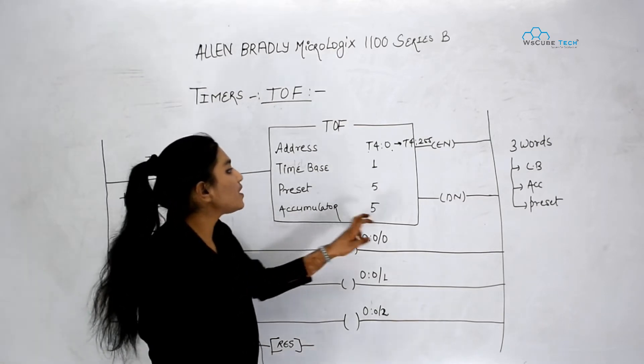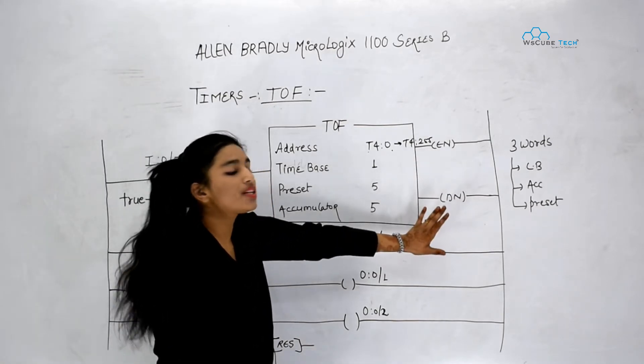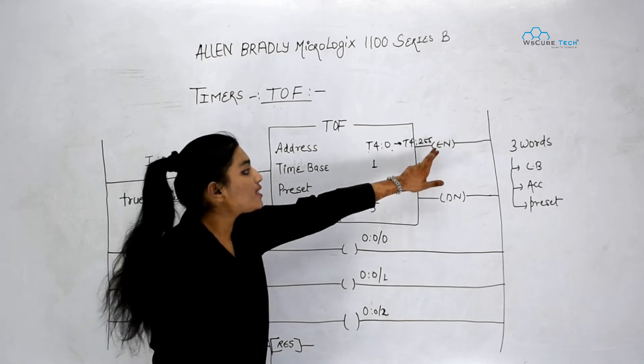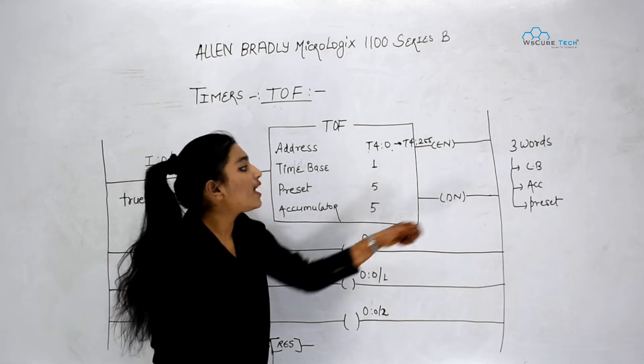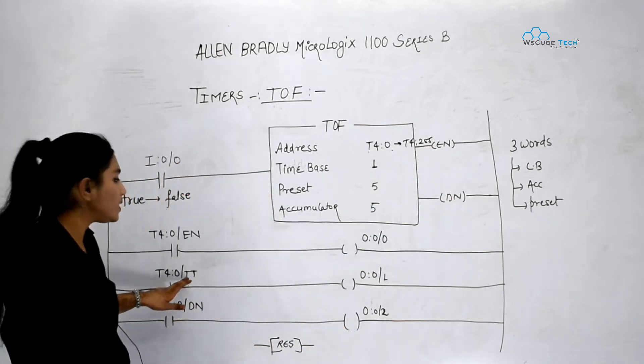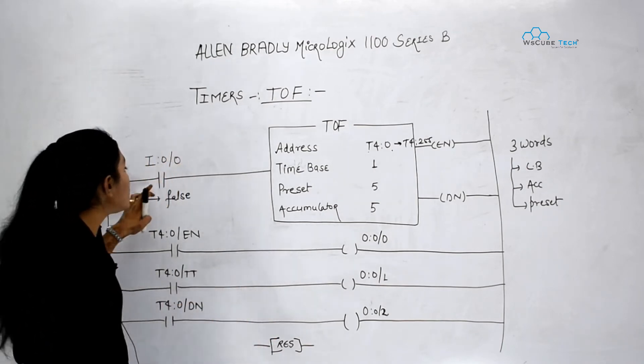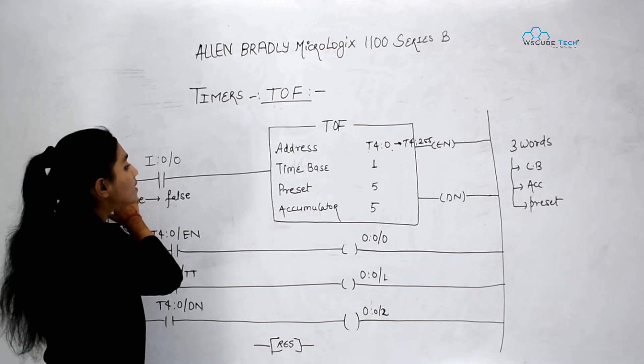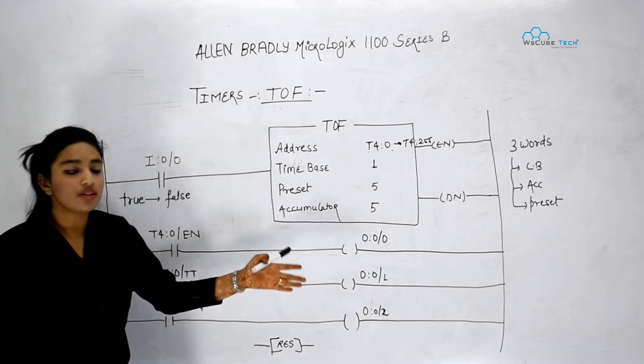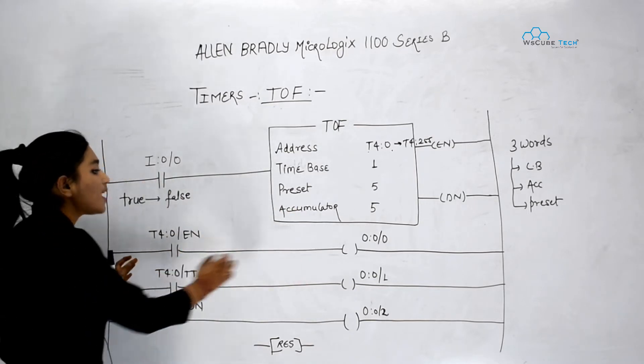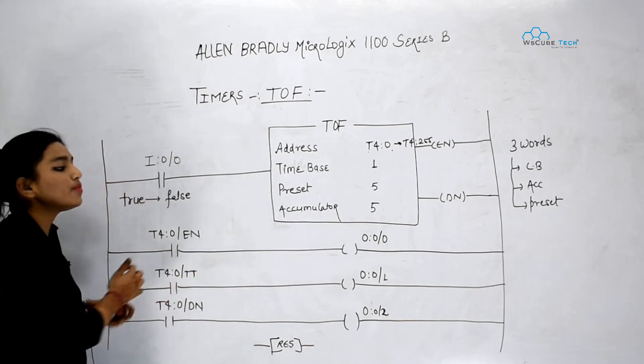Then in this instruction we have got three bits. These are known as control bits. One is enable bit, one is done bit and another we have got TT bit. So enable bit is 1 when my input is 1. It means when this rung is true that time enable bit will be 1 or true and the output which is attached to enable bit will be 1.